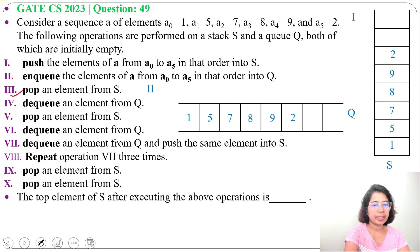Next, operation 3: pop an element from S. So we will pop 2 from stack. Next, 4th operation: dequeue an element from Q. Dequeue from the frontend, so we will dequeue 1. Next, 5th operation: pop an element from S. So we will pop 9. As 9 is present at top of this stack, let's pop 9.